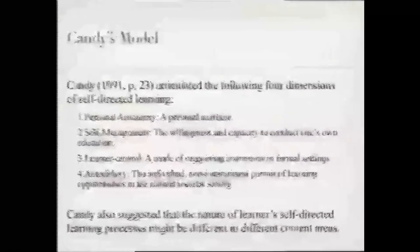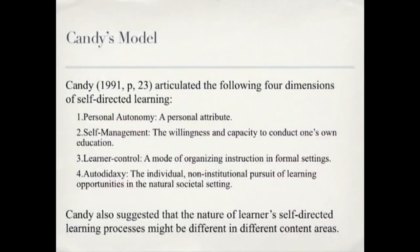Stepping back from the specific implications of online self-directed learning processes for a moment, we should consider Candy's original model. He articulated the following four dimensions of self-directed learning: personal autonomy, which is a personal attribute; self-management, the willingness and capacity to conduct one's own education; learner control, a mode of organizing instruction in formal settings; and autodidaxy, the individual non-institutional pursuit of learning opportunities in the natural societal setting. Candy also suggested that the nature of learners' self-directed learning processes might be different in different content areas.